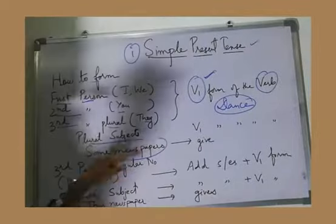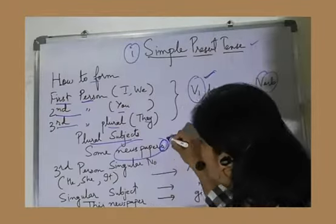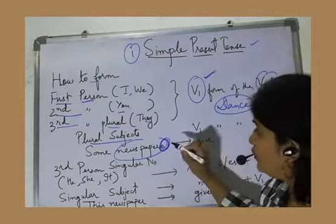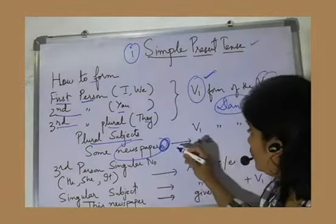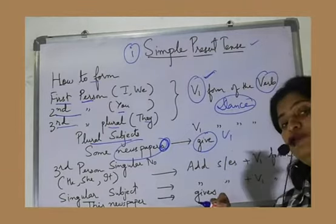Simple present tense. Example: some newspapers. See here, newspapers. Newspapers, so this is a plural subject, we use give. So give is the V1 form of the verb.